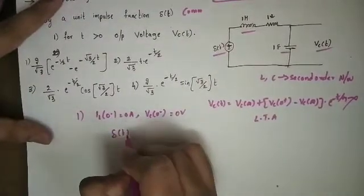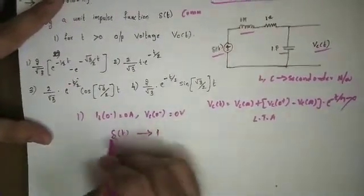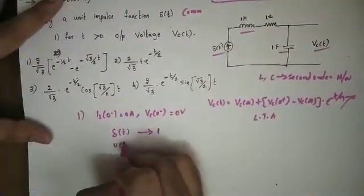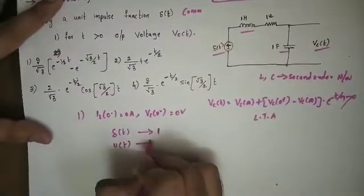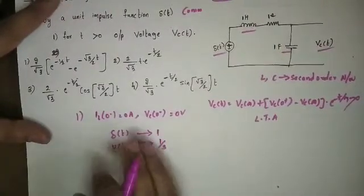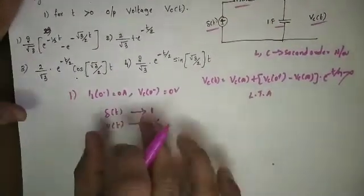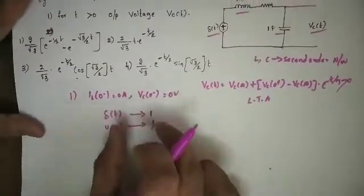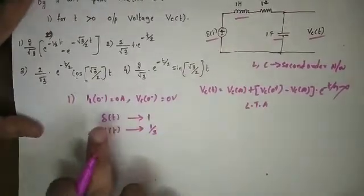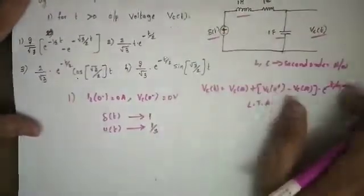Delta(t) has Laplace transform equal to 1, and u(t) has Laplace transform 1/s. So the Laplace transform of delta(t) is simply 1.